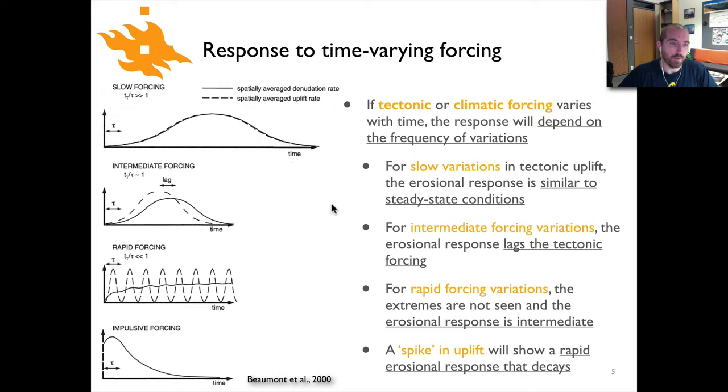If we go to an intermediate time scale where the tectonic time scale is approximately the same as the response time, we see the dashed line showing that we've slowly increased the tectonic uplift velocity before decreasing it, and there's a lag between the erosional response. The landscape has reached its most rapid uplift velocity at some time here, but the most rapid erosion rates don't occur until sometime later. In other words, it takes some time for the erosion to respond to the change in tectonic forcing.